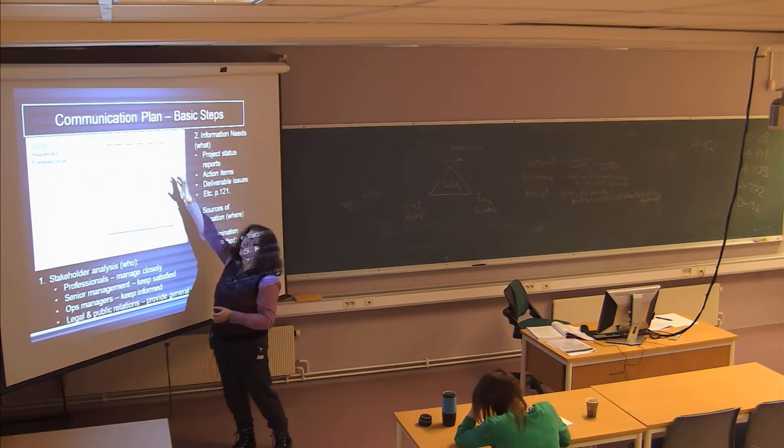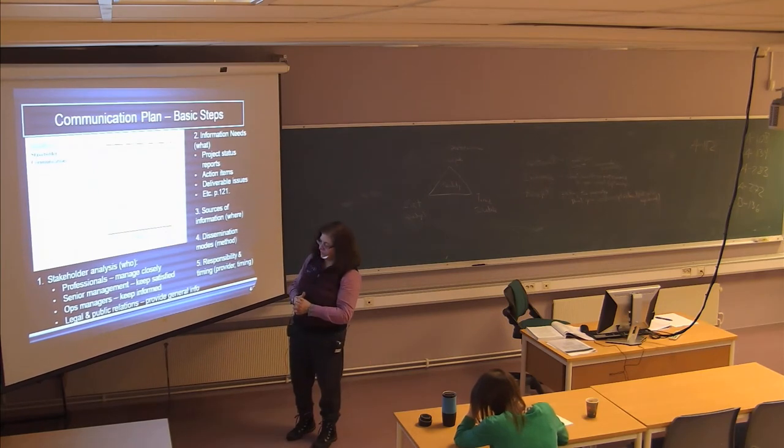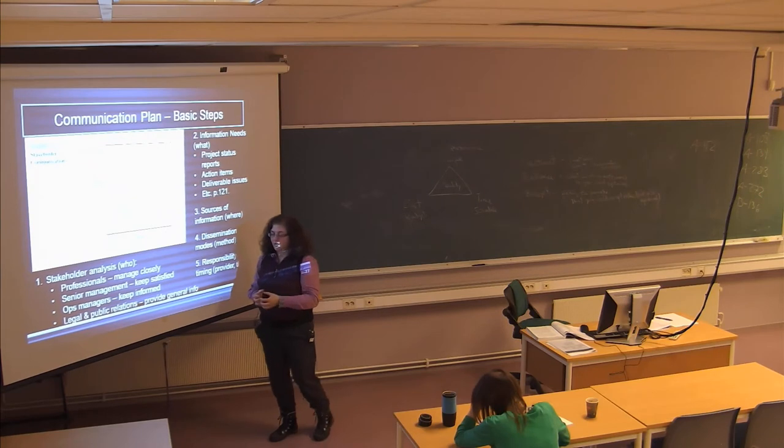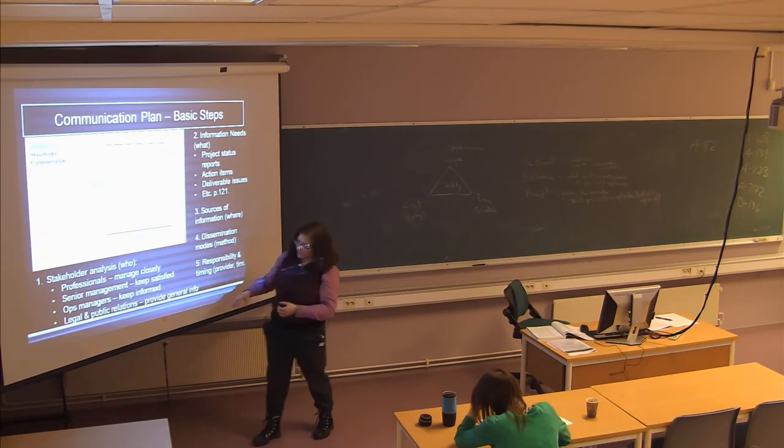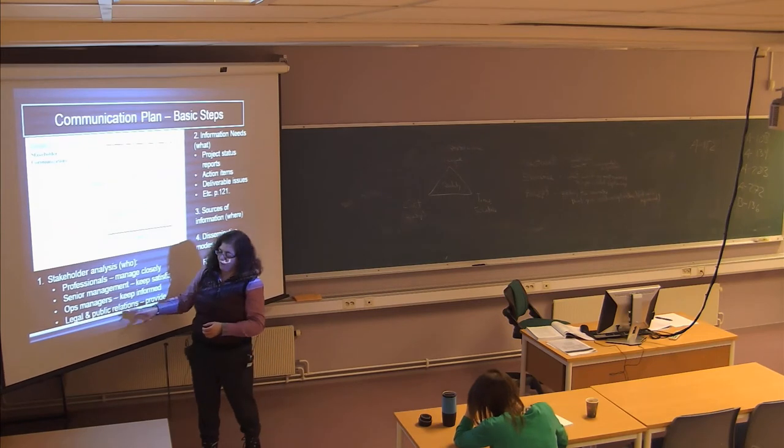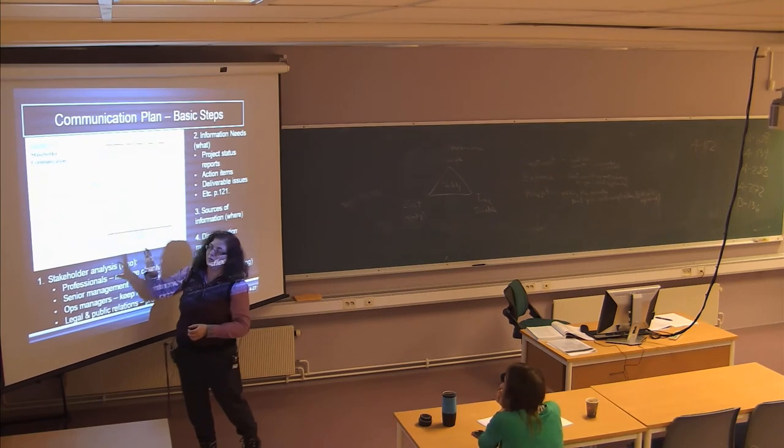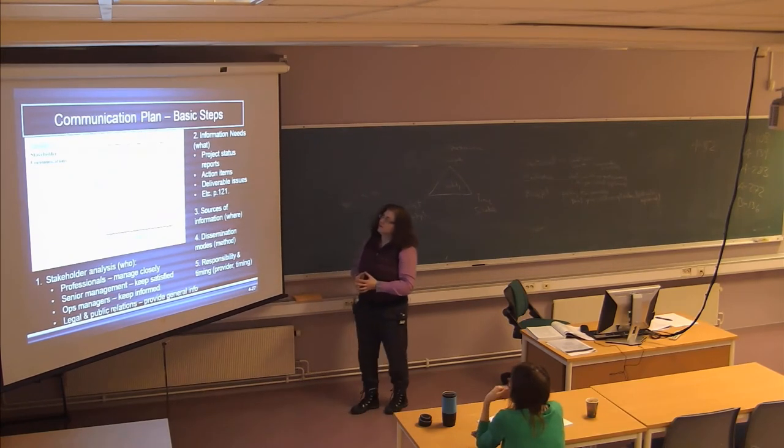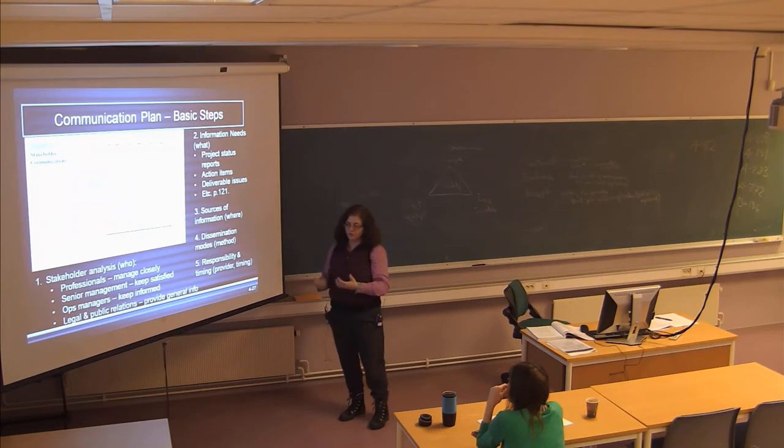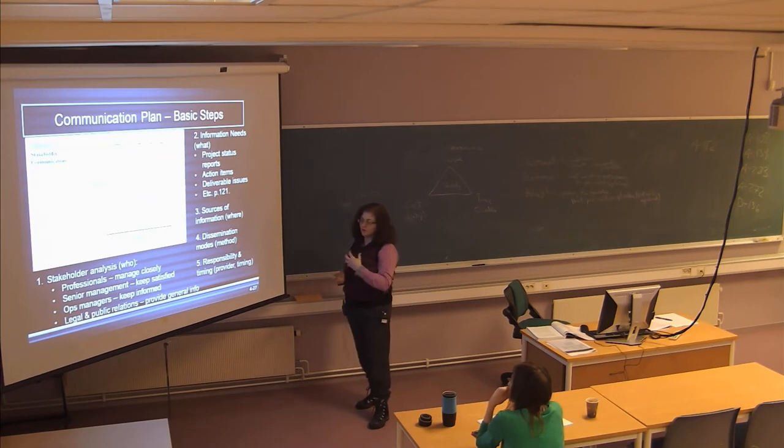Maybe the line managers are supporting the professionals that are working on the project. And then you have the general public that might have some use for this project, or they may not. They may not be directly benefiting from the project. So this could be the public relations office for the company or the legal office. Maybe they have little interest and little power in how the project goes, so you just give them general information. So after you identify the kind of information that you need to give to your target stakeholders, you're identifying who they are and what they need.